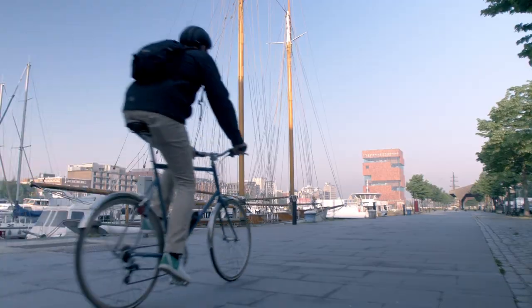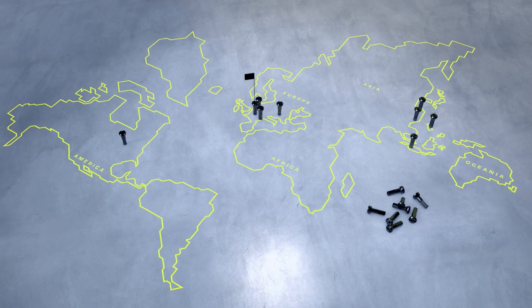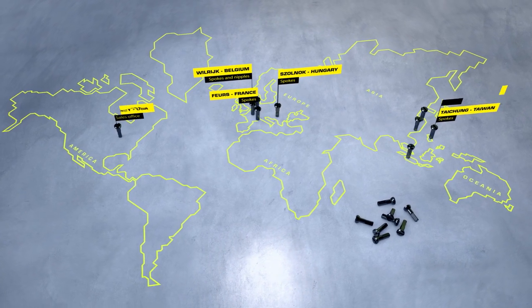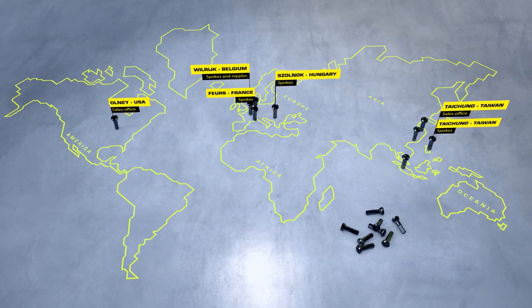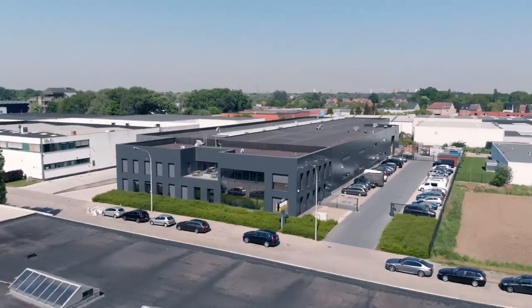Our headquarters are based in Antwerp, where we ally traditional craftsmanship with state-of-the-art technology. With four production sites and two sales offices around the world, Sapim supplies bicycle manufacturers, wheel builders, and distributors on every continent.